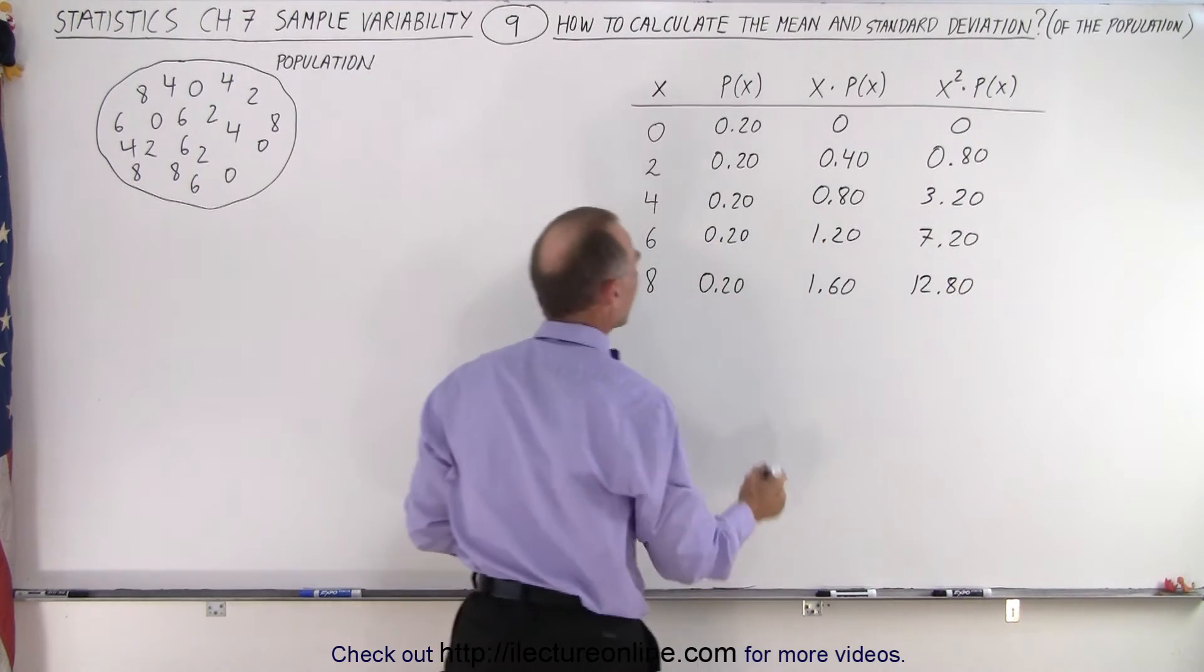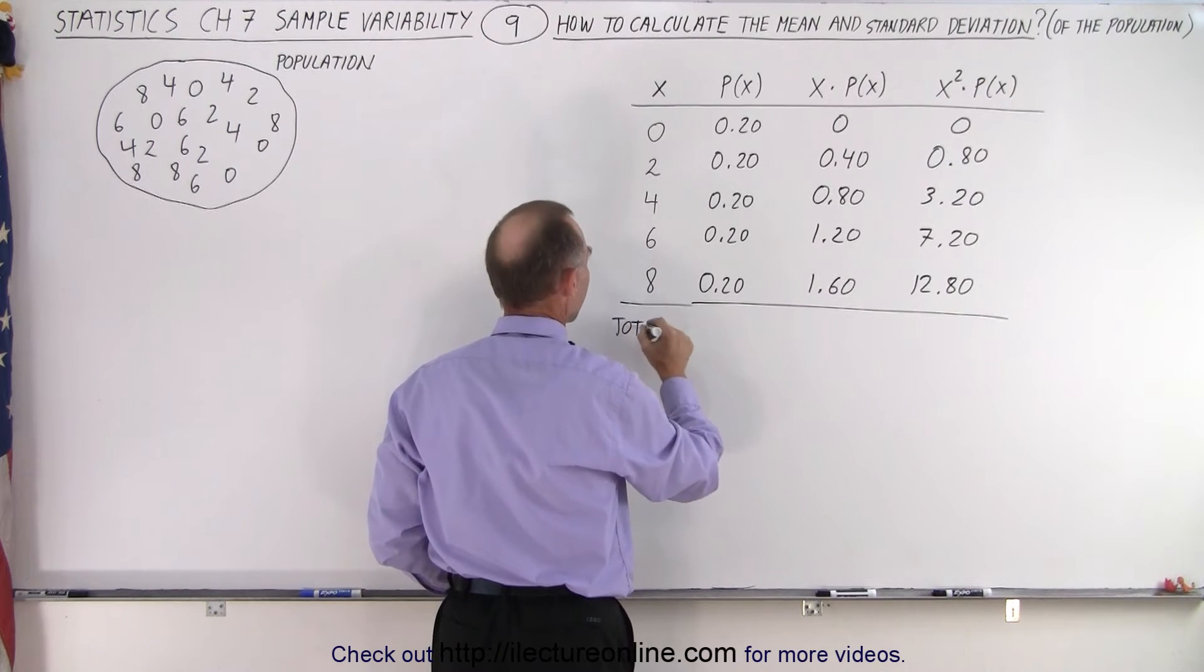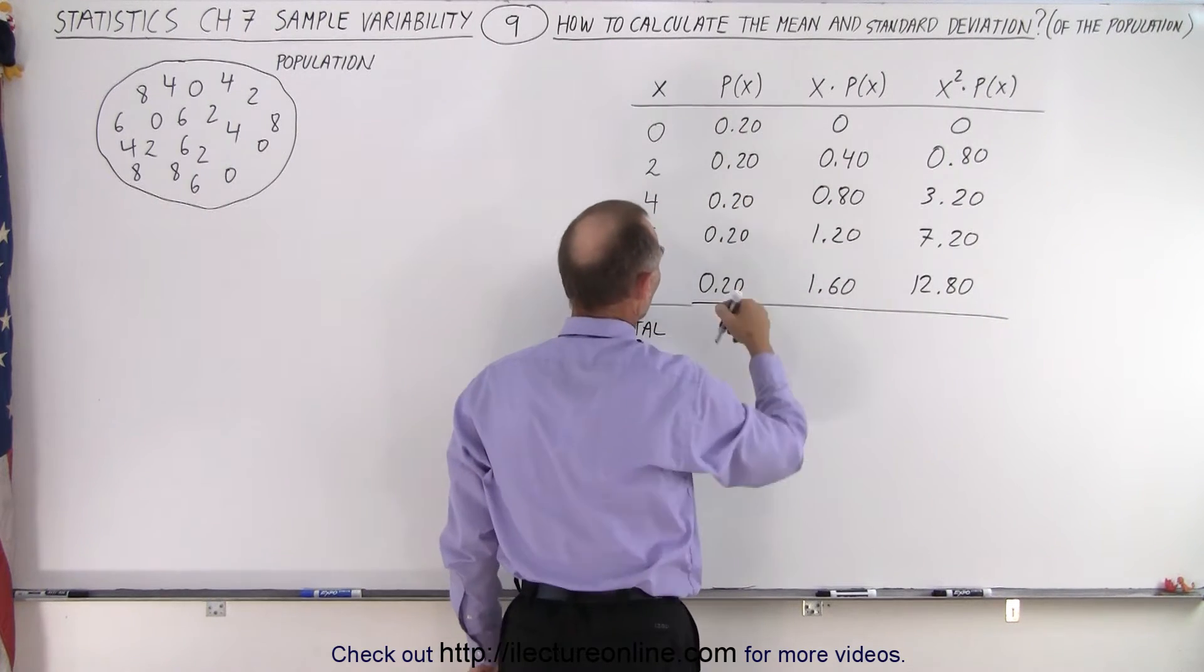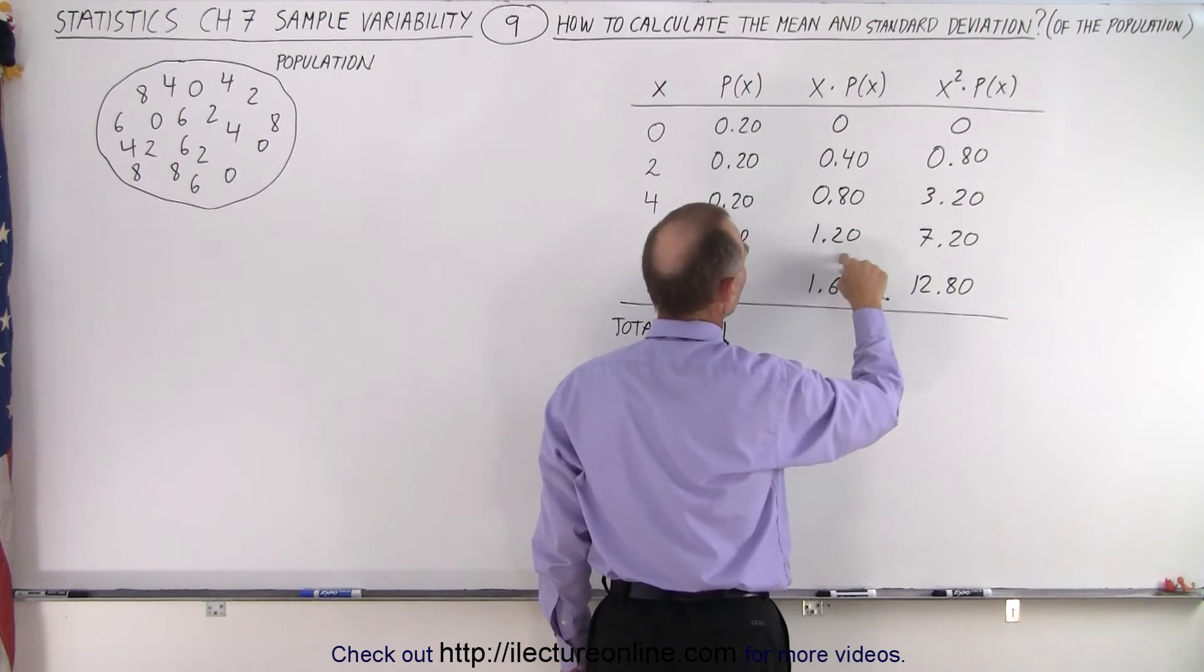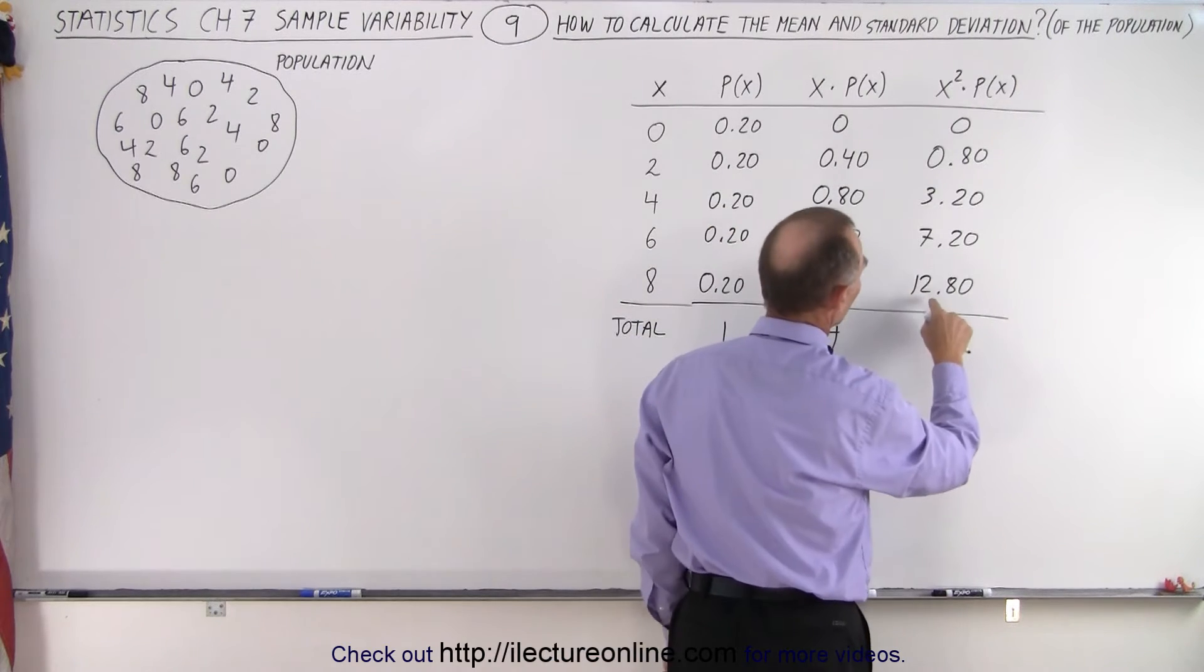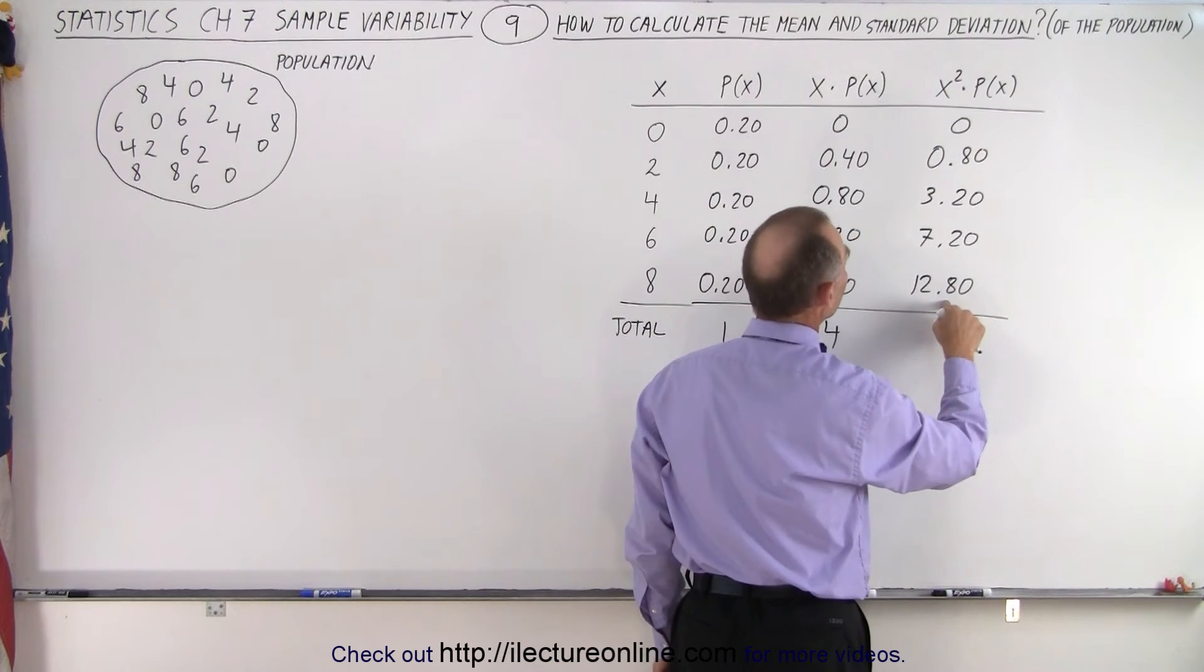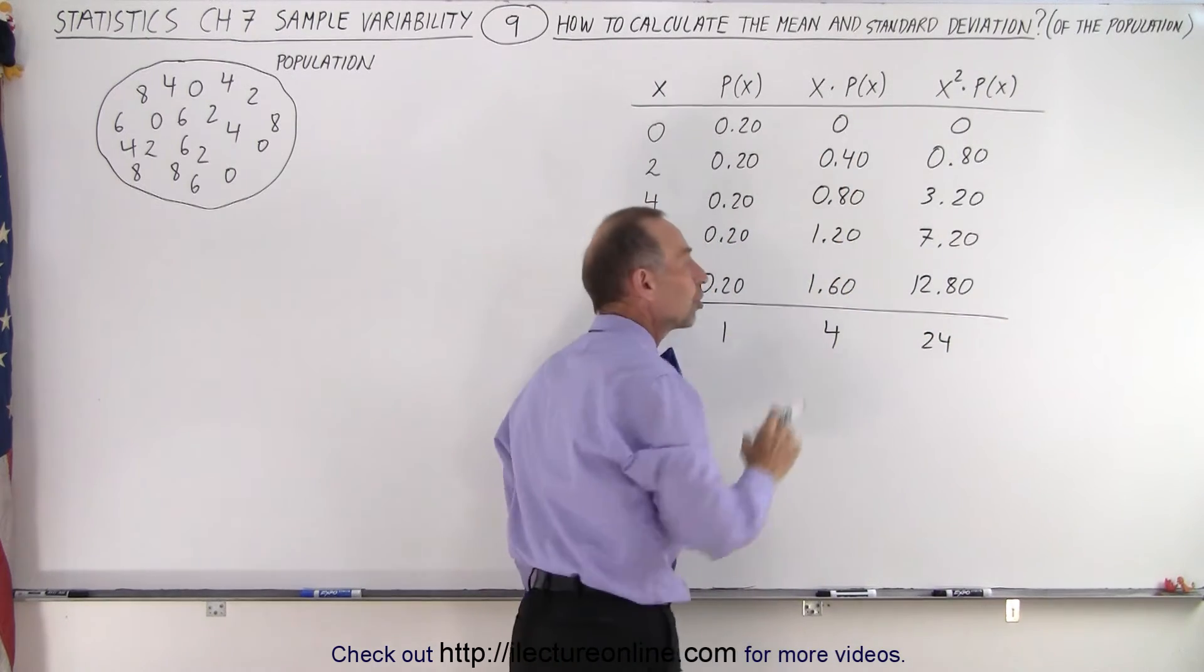All right. So now what we have to do is we have to add all these up. So now we total them up. And of course, we total them up, you get 1. Here we get 2.8 and 1.2, that gives me a 4. And here when we add these up, this plus this gives me 20, 24. All right. So those are the sums of these columns.